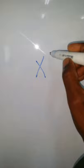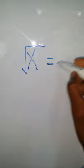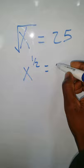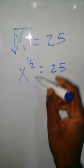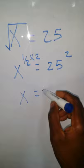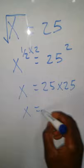We have a question: x to the power two-thirds equals 25. You have to know that any number with a fractional exponent — to remove the power, you have to multiply by the inverse of that power.